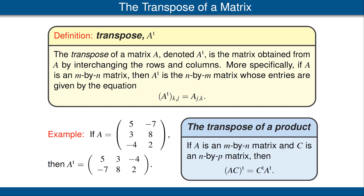Our next result is fairly easy to prove. It says that if we have two matrices A and C such that it makes sense to multiply them together, then the transpose of the product — the transpose of A times C — is equal to C transpose times A transpose. Notice how the order changes between C and A, just as happened with dual maps.